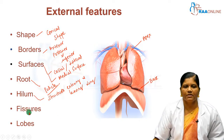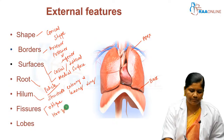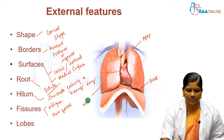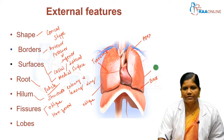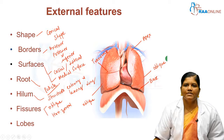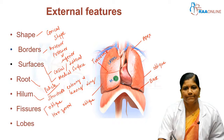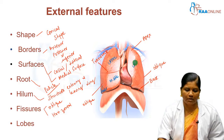The lung has two types of fissures: oblique fissure and horizontal or transverse fissure. The right lung has both fissures — the oblique fissure and the transverse fissure. The left lung has only one fissure, the oblique fissure. The right lung has three lobes: upper, middle, and lower lobe. The left lung has only two lobes: upper and lower lobe.